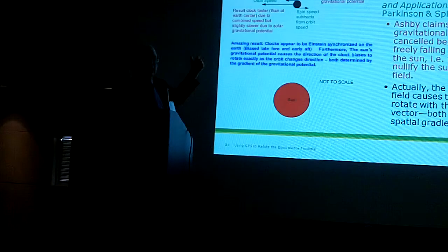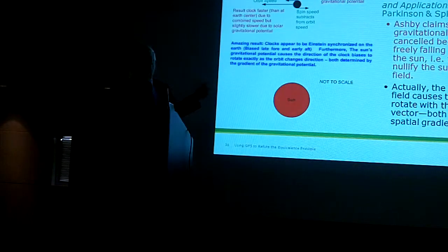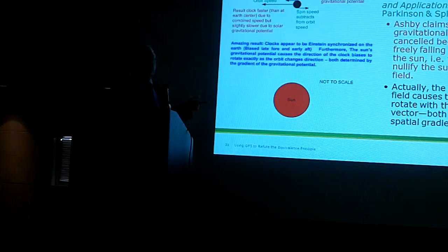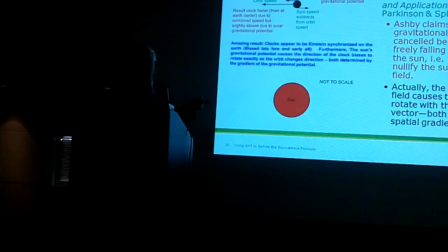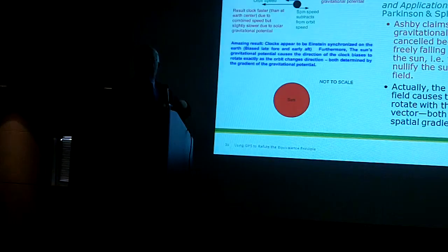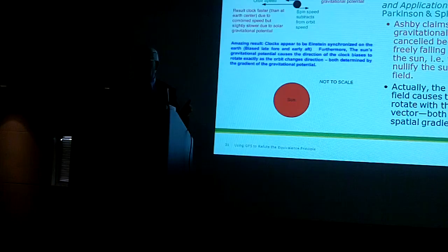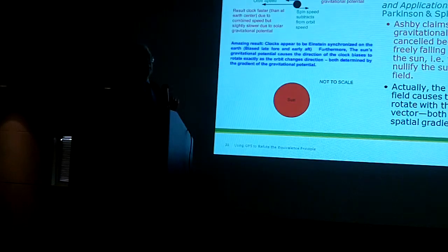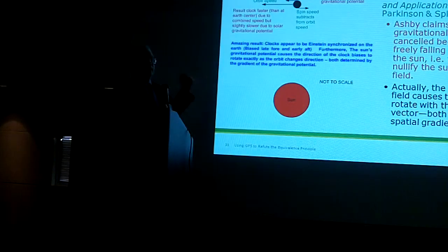From the sun, the gradient of that gravitational potential with respect to distance — the same thing that causes the force to change the direction — changes the clocks to change the bias direction, so that it still looks like the speed of light is C on the Earth. A neat effect, but they claim it's not even there, and they claim it's not there because of ILTs.